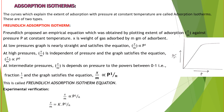Moving on to adsorption isotherms. The word 'isotherm' immediately suggests constant temperature. Adsorption isotherms are the curves which explain the extent of adsorption with pressure at constant temperature. The extent of adsorption refers to how much of the surface is being covered with the adsorbed molecules.